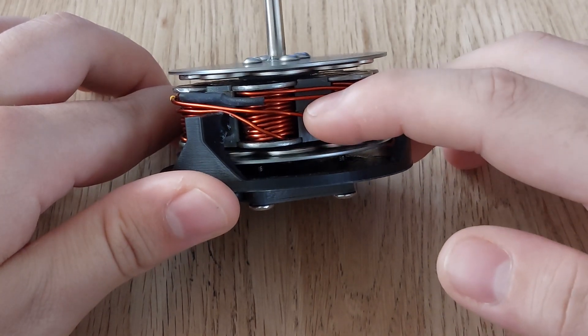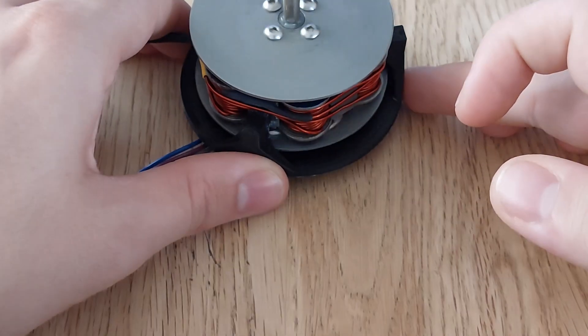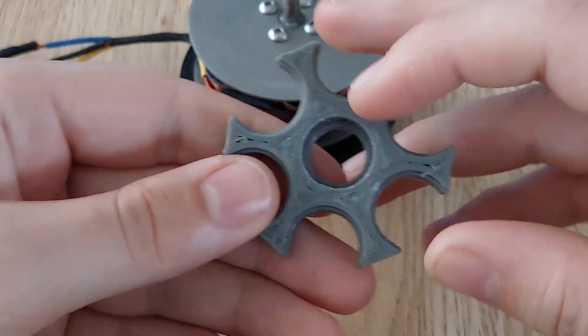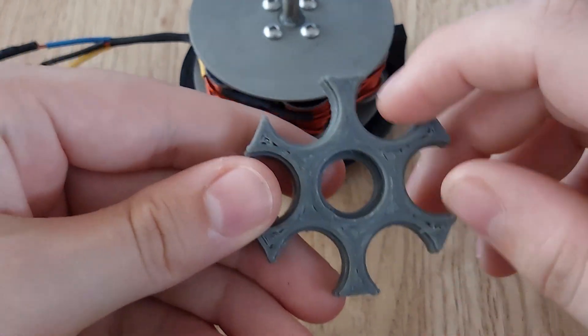These spools are held together by 3D printed parts. I have a copy of the 3D printed part right here. In the middle there is space for a bearing and on the outside there is space for the spools.